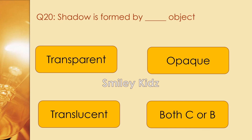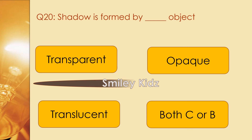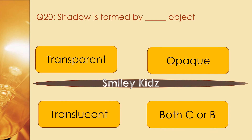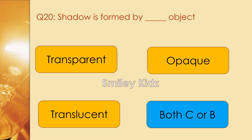Question number 20. Shadows are formed by dash objects. Options are transparent, opaque, translucent, and both opaque and translucent. The right answer is both opaque and translucent. Shadows are formed by opaque or translucent objects.